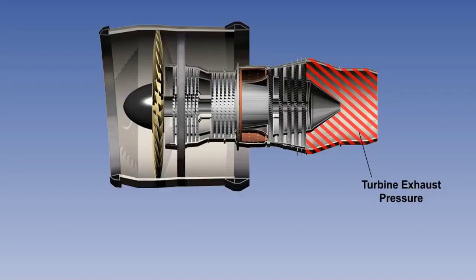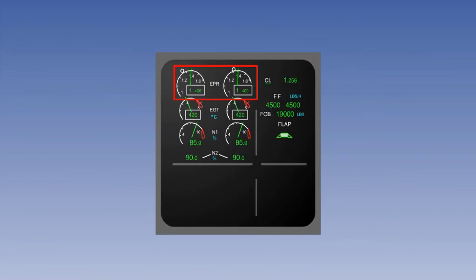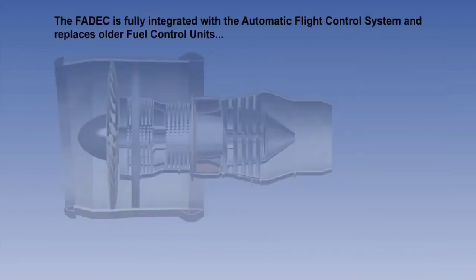The primary thrust parameter is engine pressure ratio, known as EPR, which is the air pressure at the turbine outlet compared to the compressor intake. If EPR is not available, then N1, which is the speed of the first stage of the compressor, is used instead. The thrust lever is therefore used to select a thrust value of either EPR or N1. Full authority digital engine control, or FADEC, systems are designed to eliminate the problems associated with the older hydromechanical engine fuel control systems. The FADEC is fully integrated with the automatic flight control system and replaces the older fuel control units, although a fuel pump and metering valve are still required. However, they are controlled electronically to optimise thrust with minimum fuel burn.